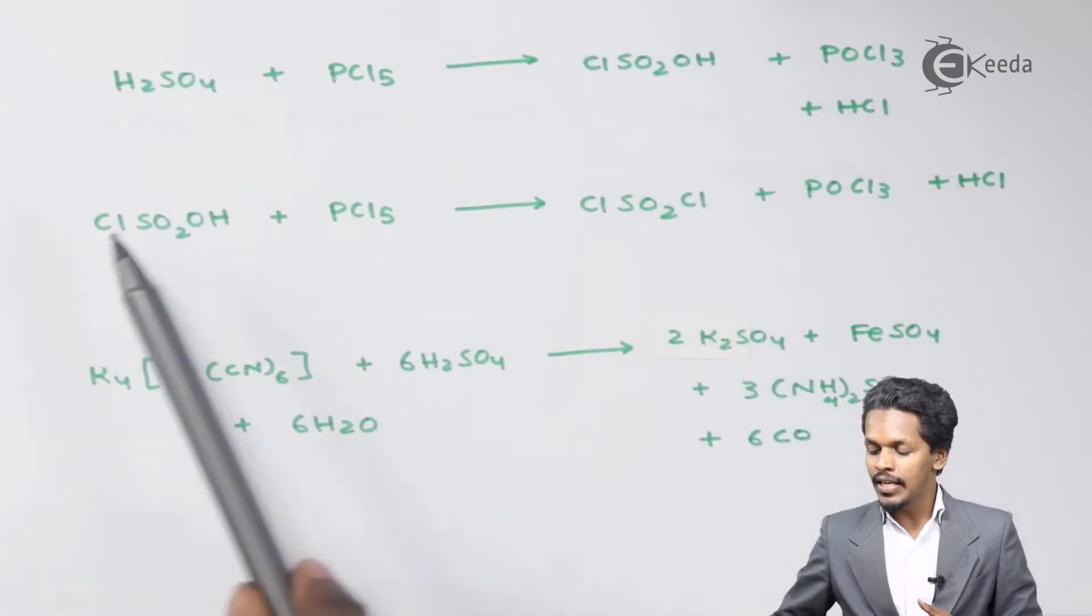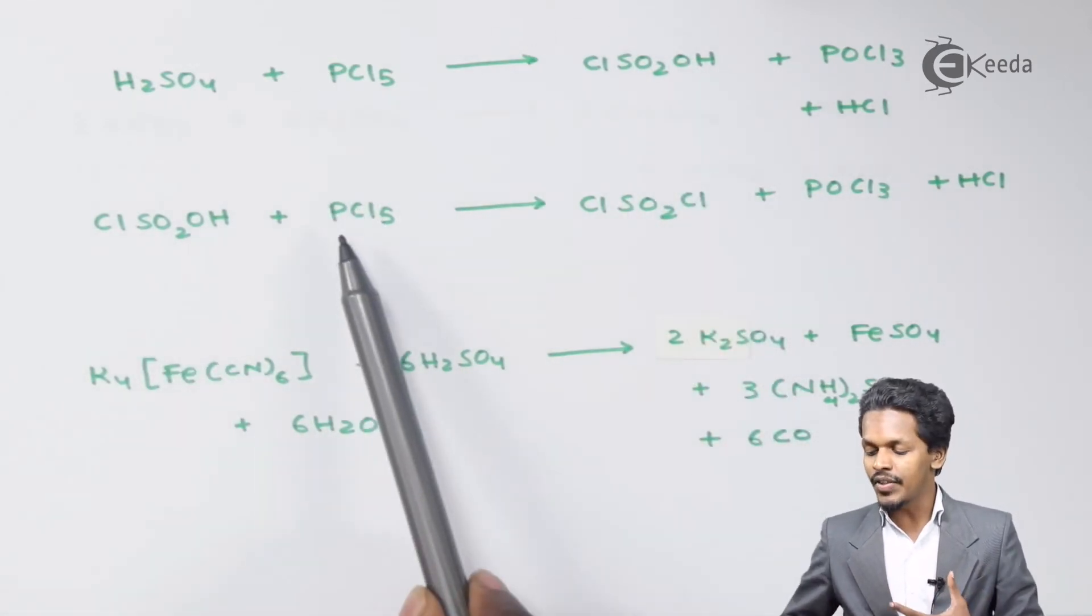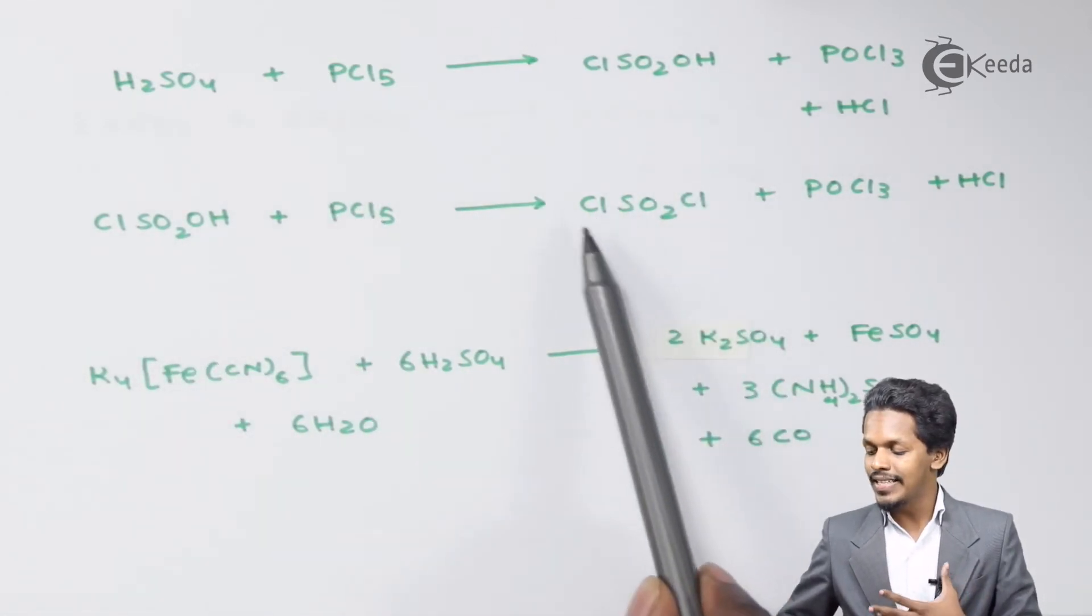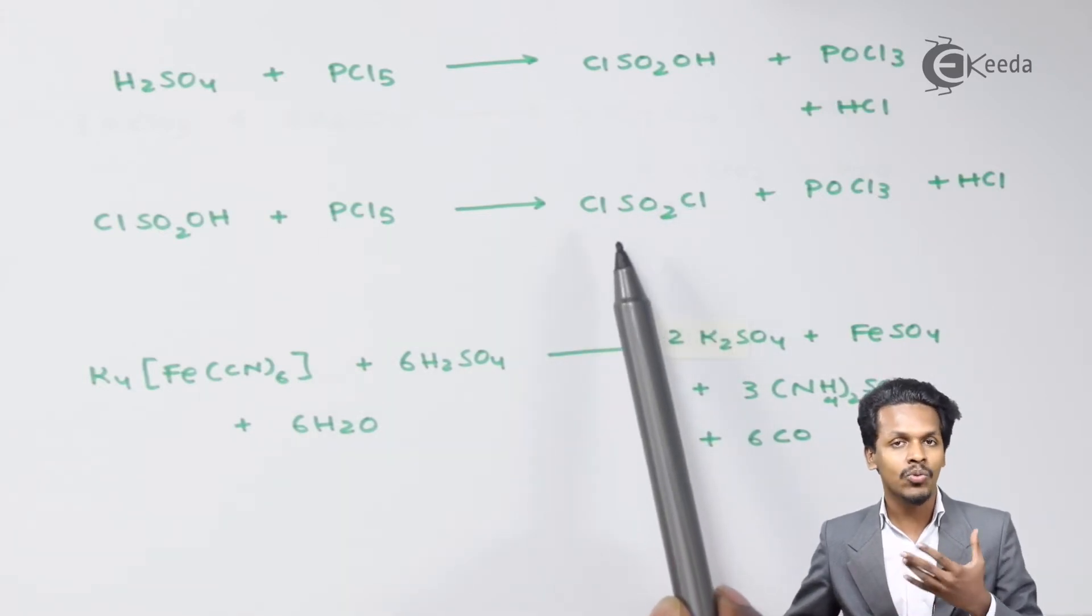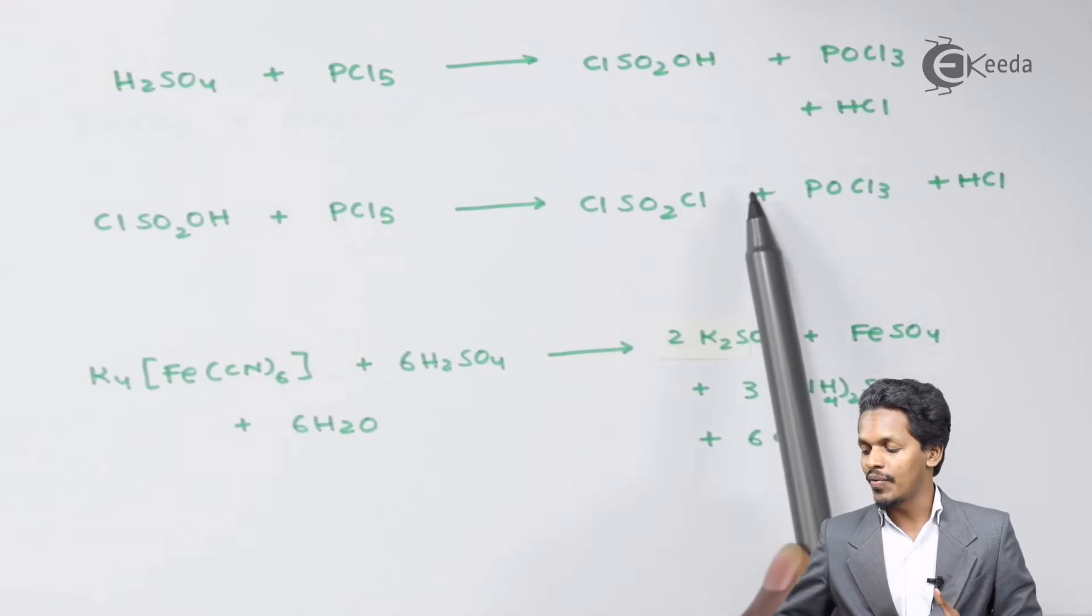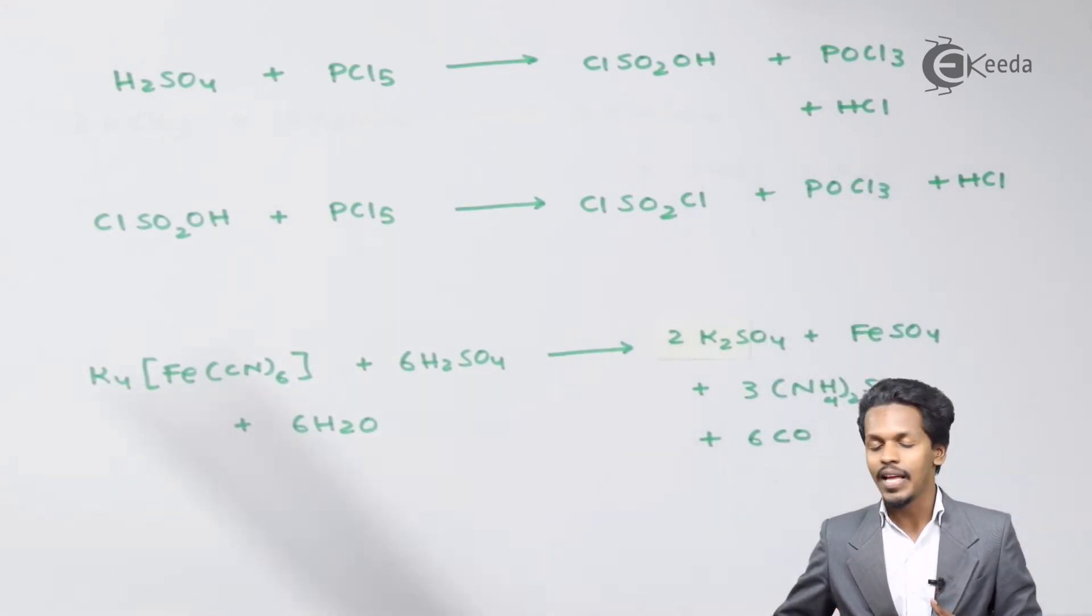But if this chlorosulfuric acid is further treated with PCl5, we could form ClSO2Cl, or we could also call it SO2Cl2, that is known as sulfuryl chloride, along with POCl3 as a byproduct.